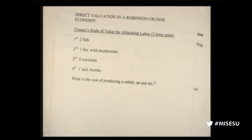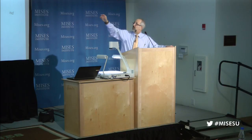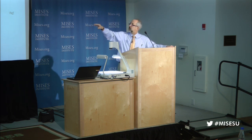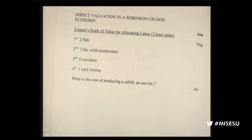Was Mises saying it was impossible to have any kind of economy? No — you could have a very small household economy that runs on socialist lines. Think of Robinson Crusoe on an island with just a few factors of production — his own labor and some natural resources. He can figure out values directly because he can only produce a few goods. If he allocates labor in 3-hour units over a 12-hour day, he can rank: two fish, three pounds of wild mushrooms, eight coconuts, one sack of berries.